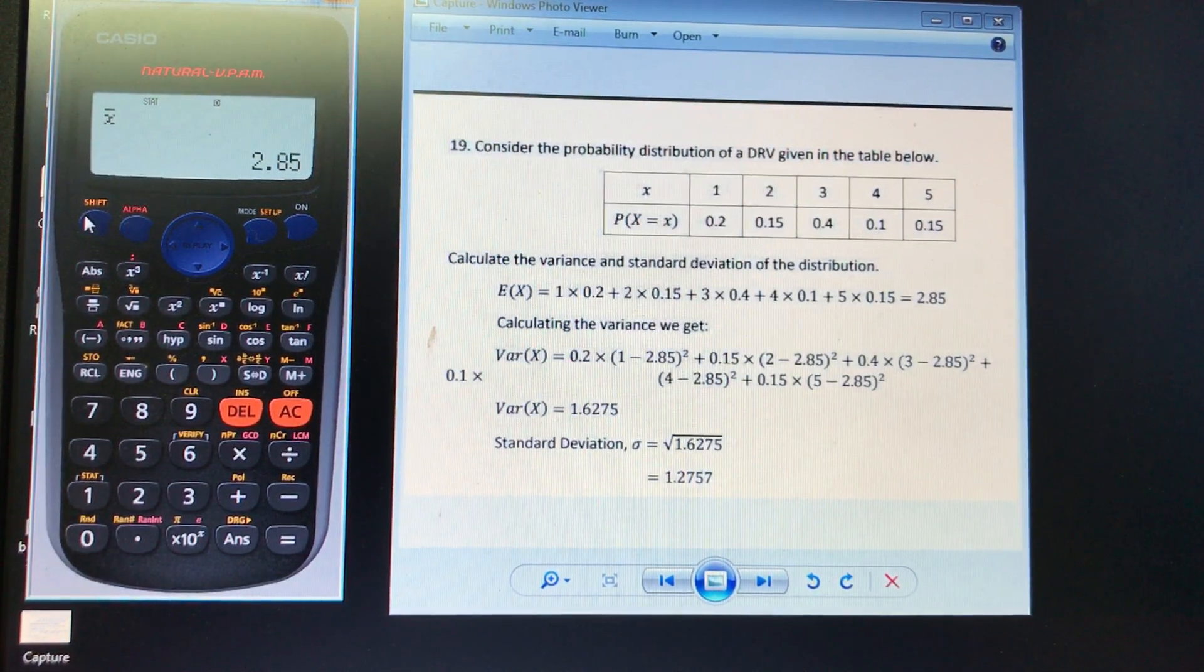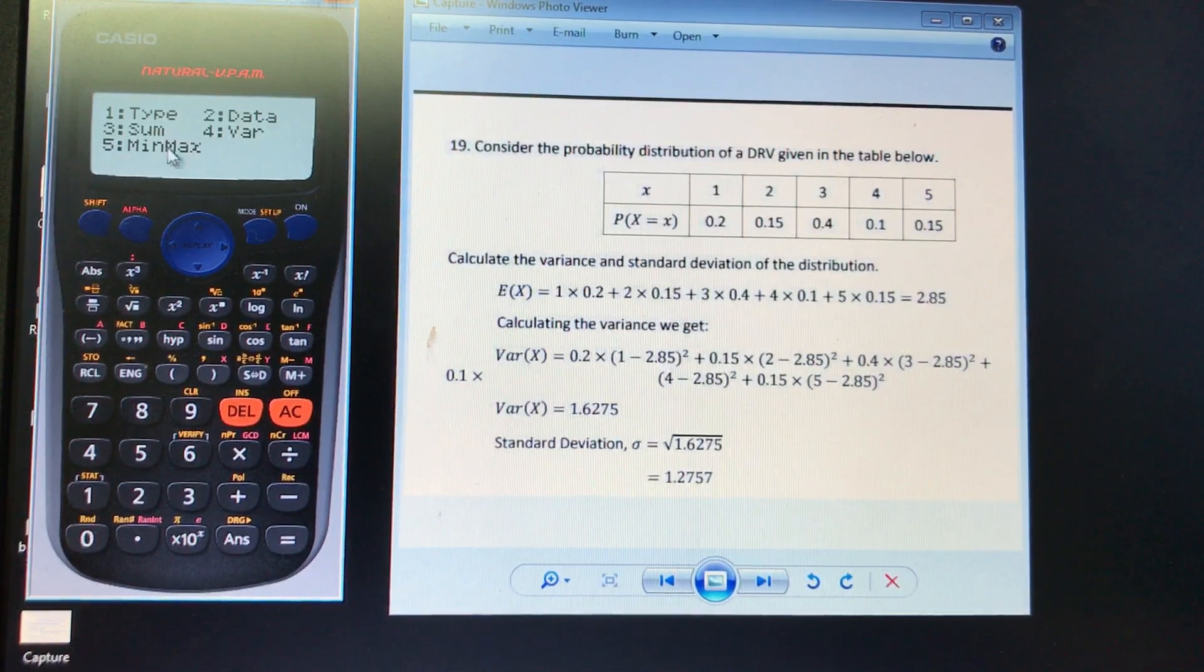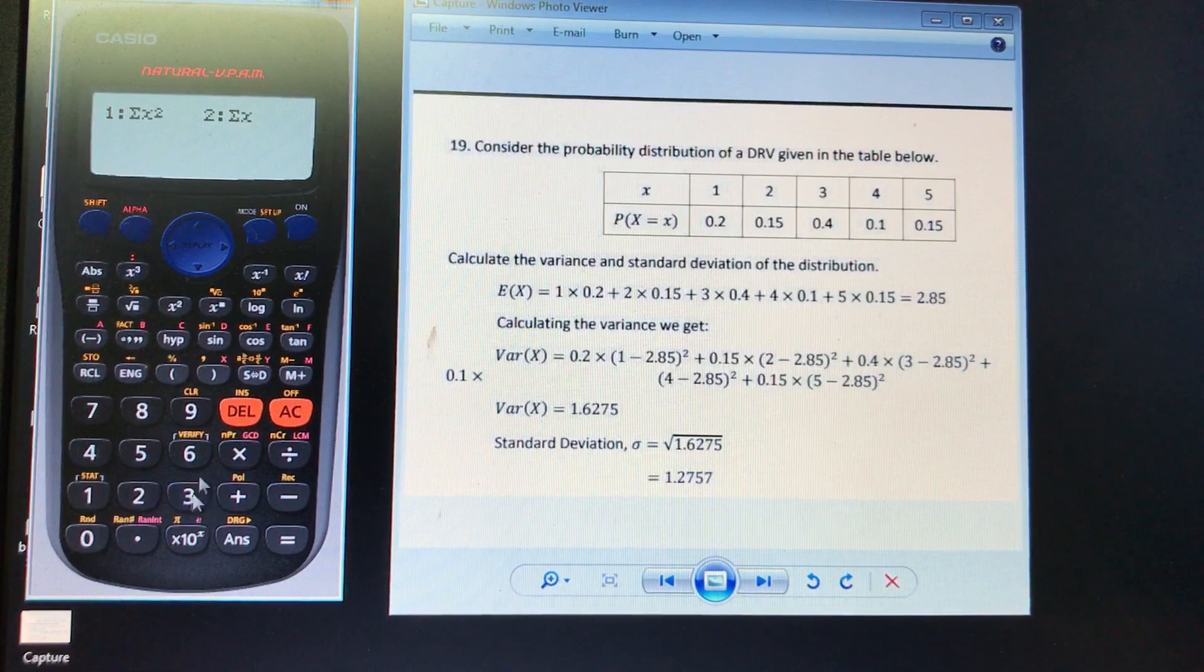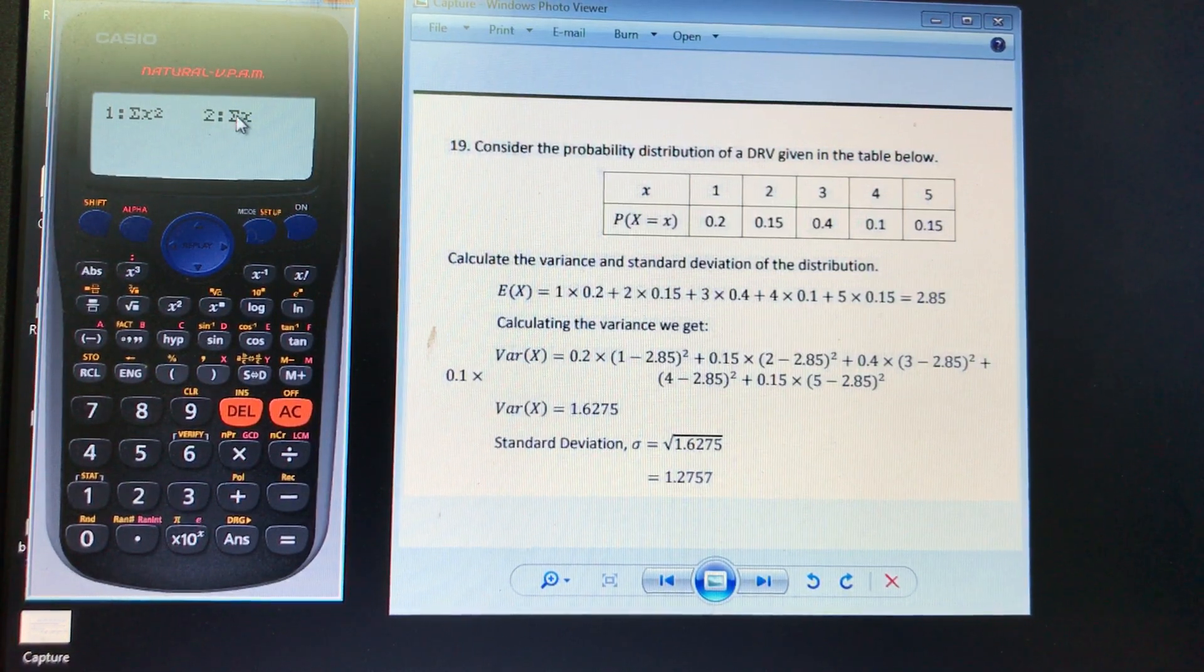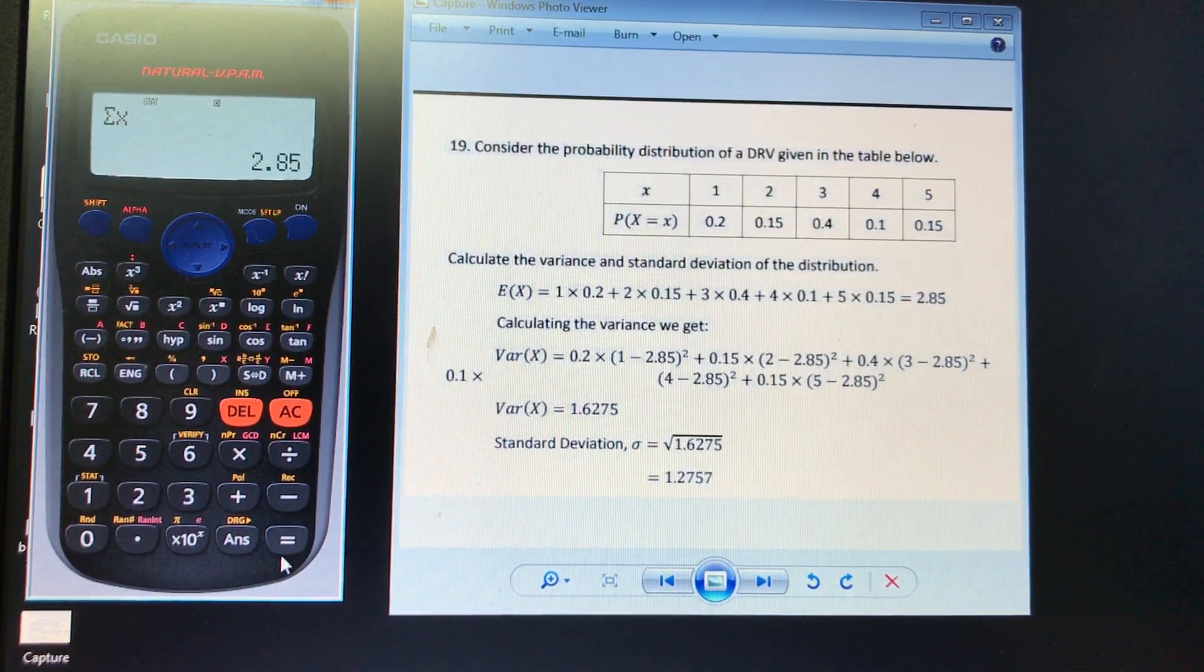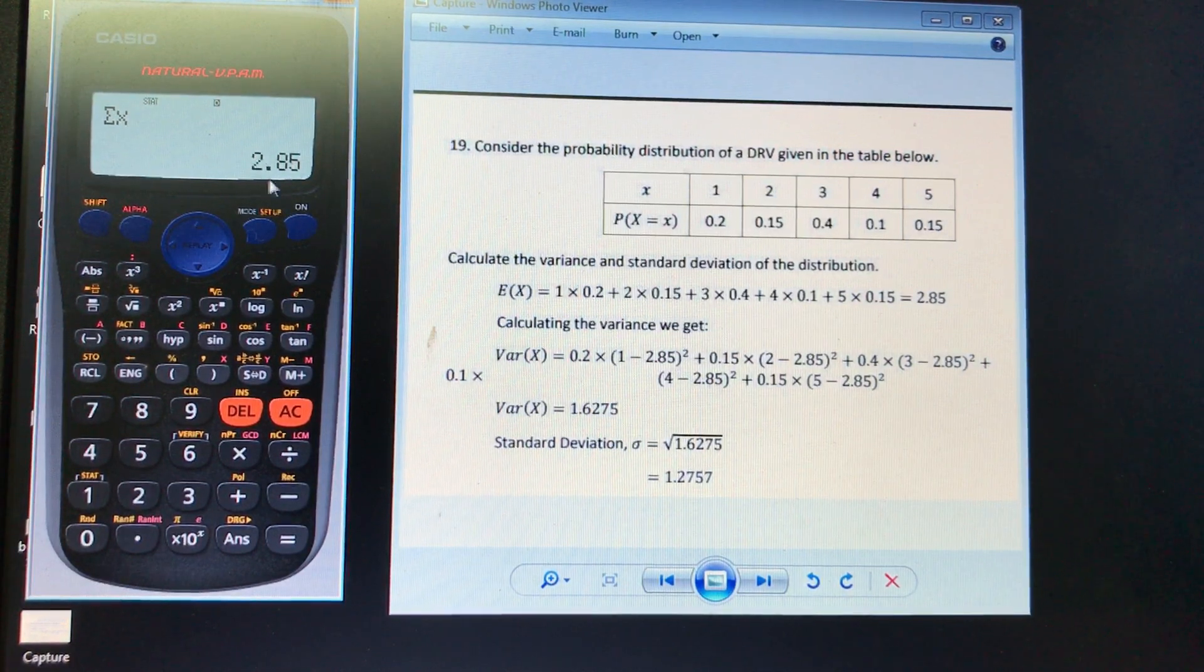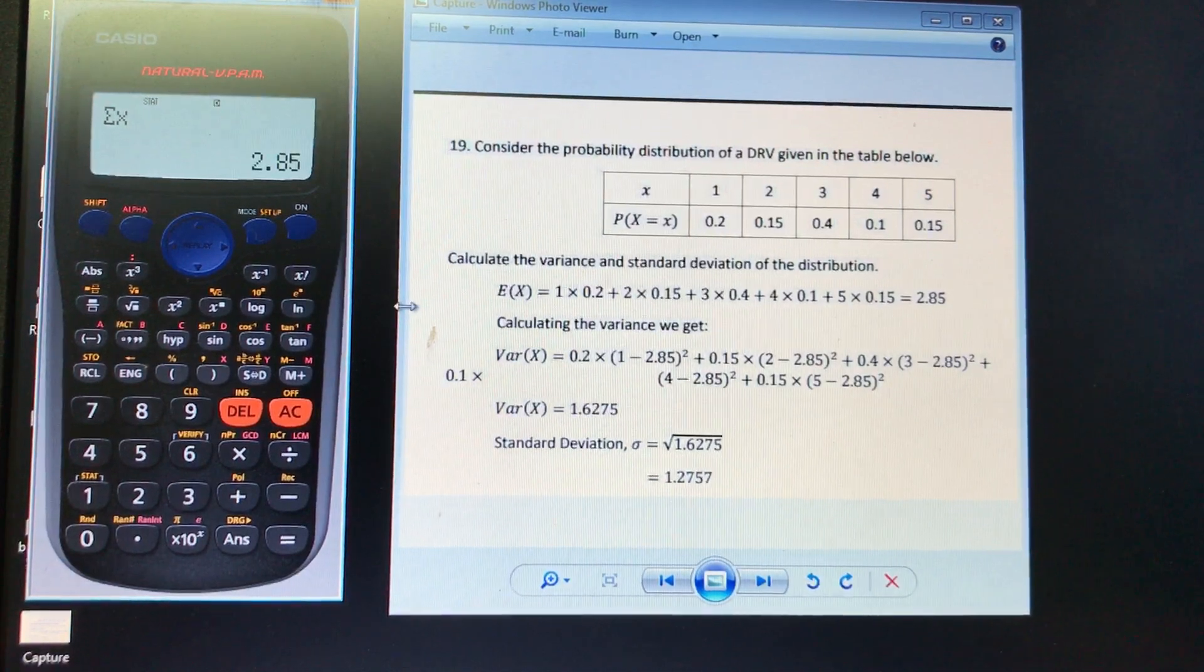The other way that we could find the expected value, if we go shift 1 and what we can go is we can go into the summary or the sum and when we get to the sum, that kind of looks like our expected value, the sum of all the scores multiplied by their probability. So if we go 2, press equals, you can see I get 2.85 again. So they're two different ways we can find the expected value.